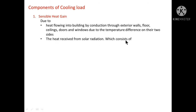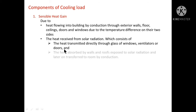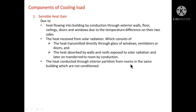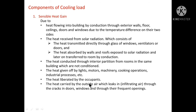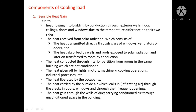The heat received from solar radiation consists of heat transmitted directly through the glass of windows, ventilators or doors, and heat absorbed by walls and roofs exposed to solar radiation and later transferred to the room by conduction. Next is heat conducted through interior partitions from rooms in the same building which are not conditioned. Next is heat given off by lights, motors, machinery, cooking operations, industrial processes, etc. Next is heat liberated by occupants. Next is heat carried by outside air leaking in through cracks, and heat gained through walls of ducts carrying conditioned air through unconditioned space.